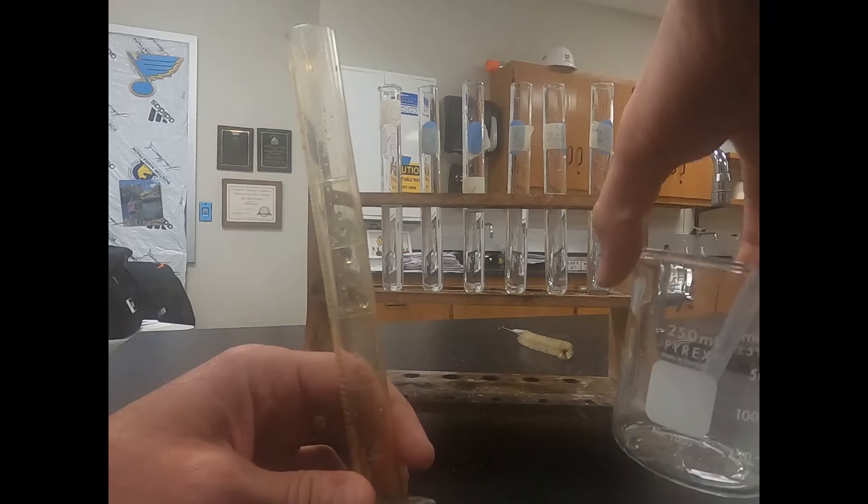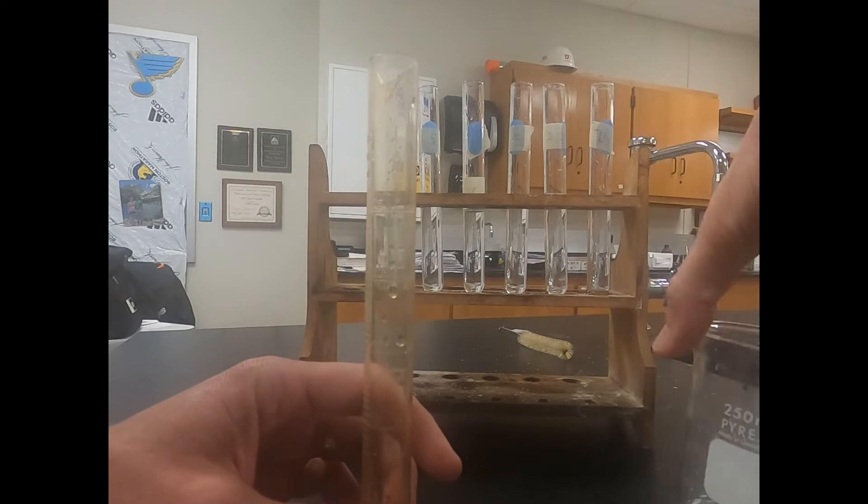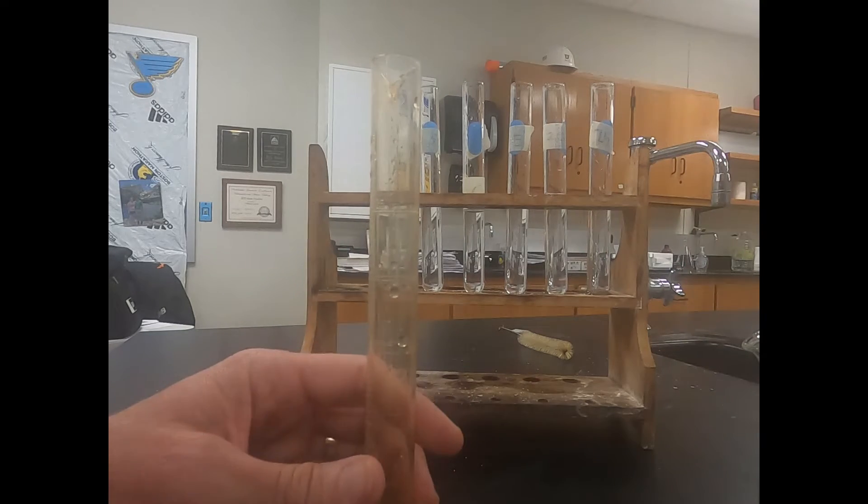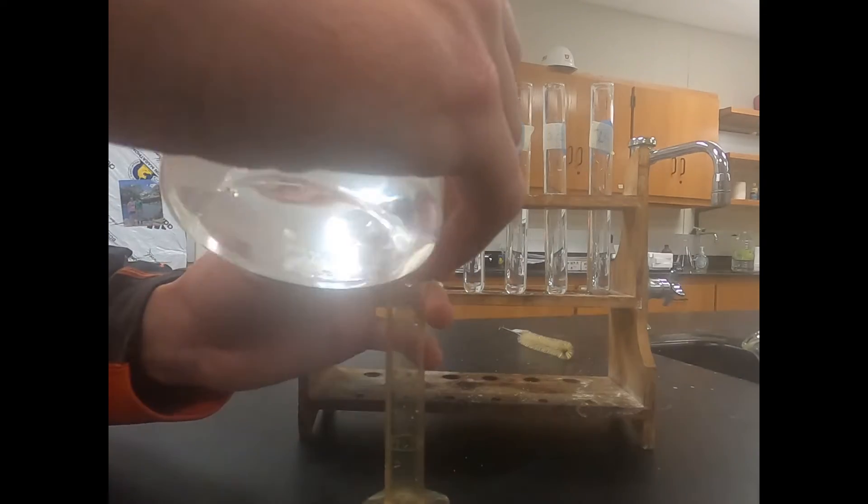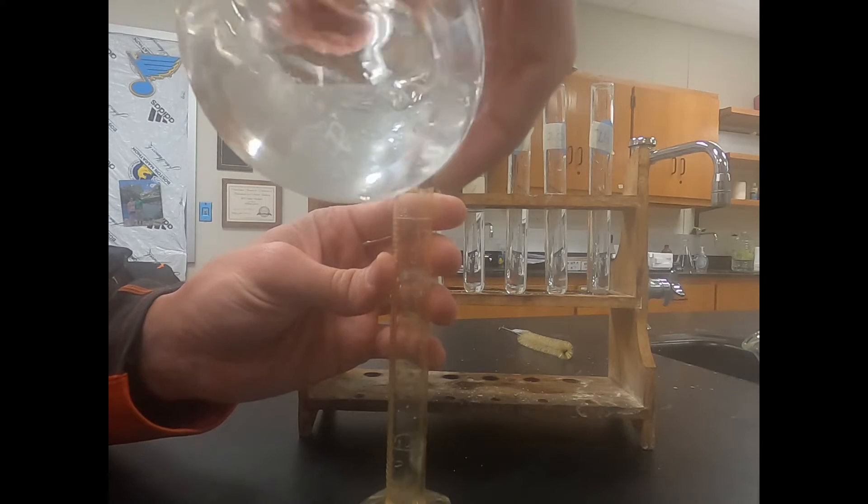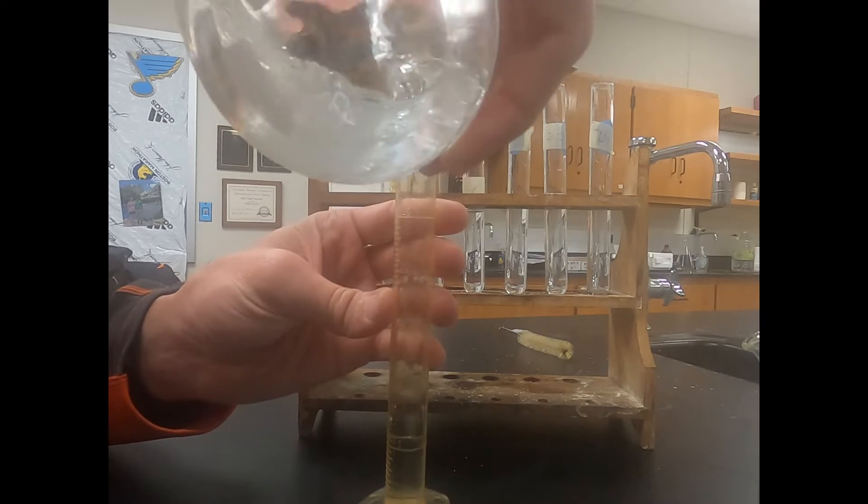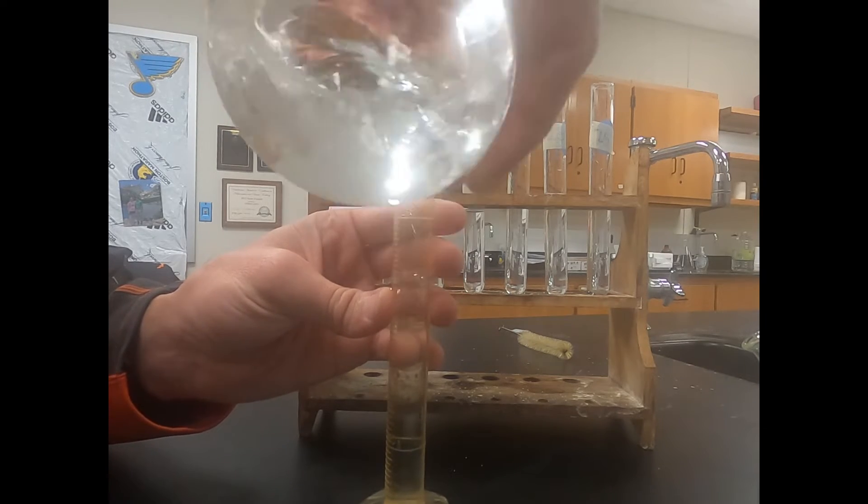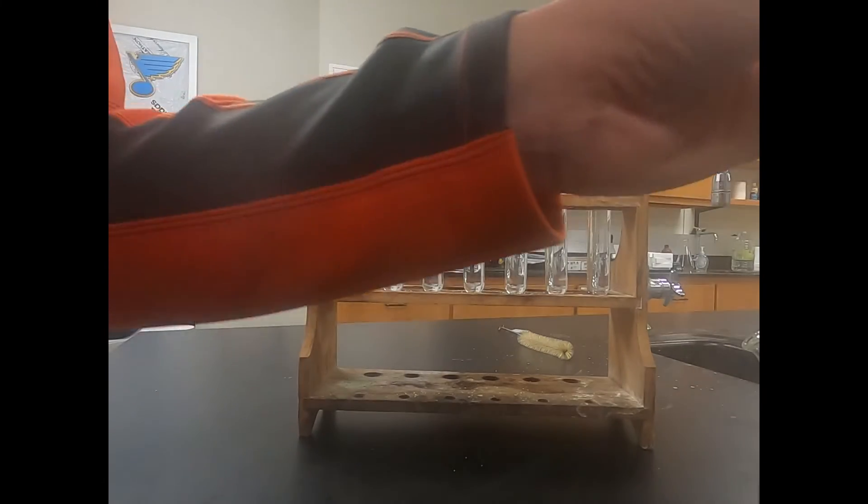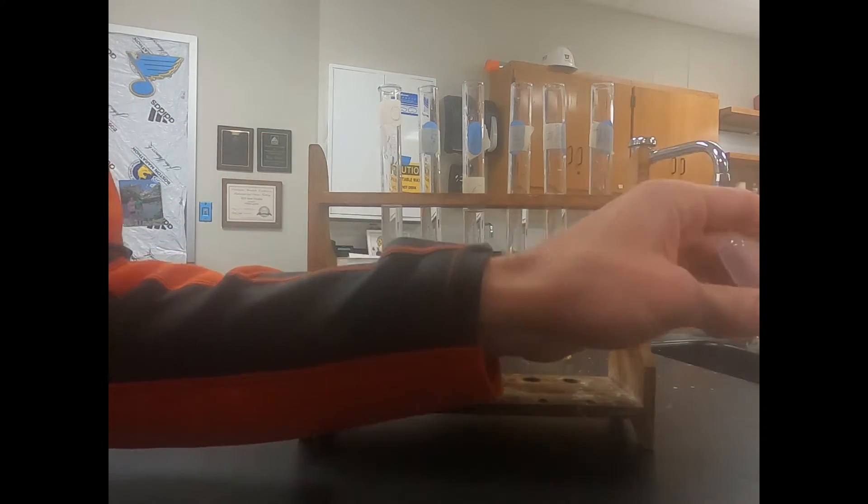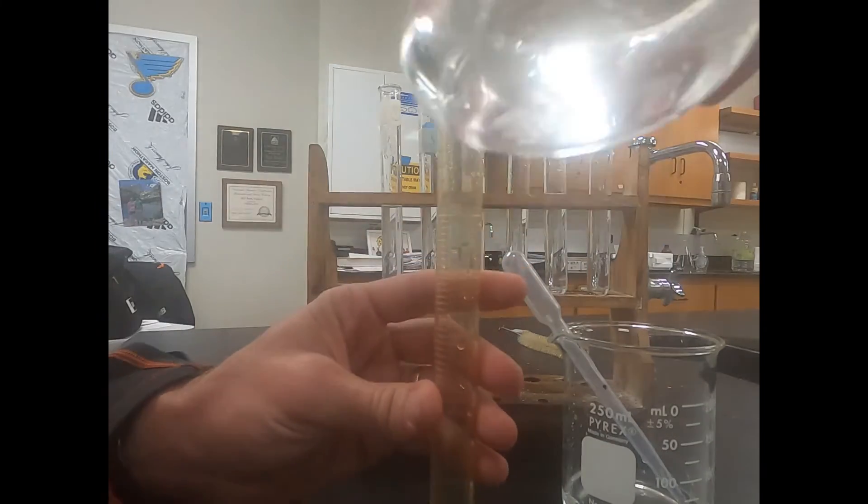So now we have 10 milliliters of water in each one of our test tubes. Next we're going to make a sugar solution we're going to use later. I have an empty beaker and I'm going to put 50 milliliters of distilled water in there. This graduated cylinder measures to 25 so I'm just going to fill up twice.